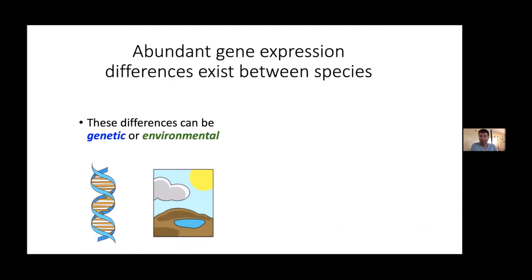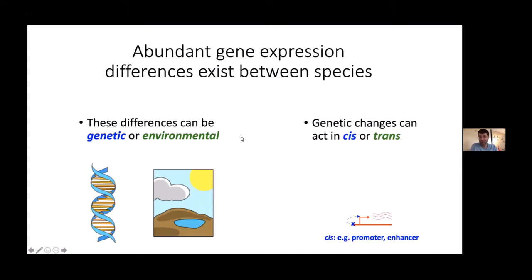Any time we look between any two species, we can always find thousands of gene expression differences, which is very easy to do nowadays with RNA sequencing. What's more difficult is interpreting what these tell us. These differences can be genetic or environmental — especially in cases like humans where you can't control the environment at all. And if they are genetic, the changes in gene expression can act through two different mechanisms called cis and trans.